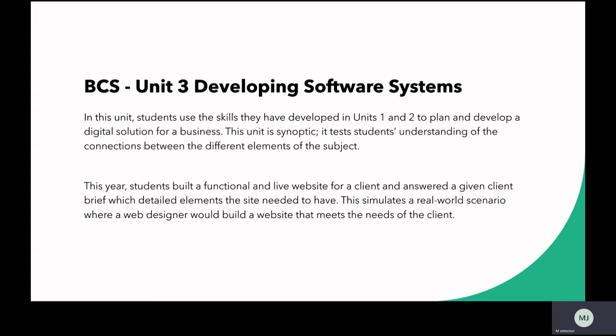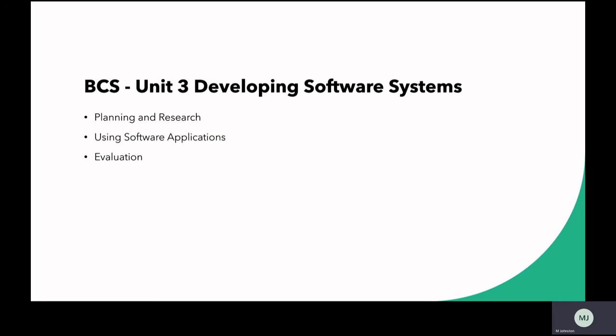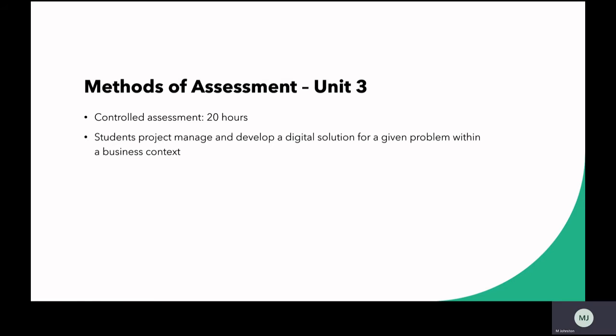Unit three, developing software systems, is a unit that students complete at the beginning of year 12 where they develop a digital solution for a business. This year it was a website, and students had to take a client brief and propose and build their solution. The skills assessed include planning and research, using web editing and web development software, and how students evaluate their own performance. This unit lasts for 20 hours, is completely based in school, and students manage their own project with guidance from the class teacher.